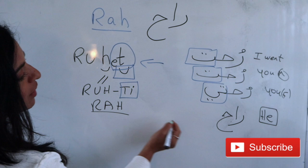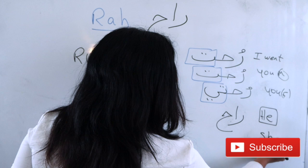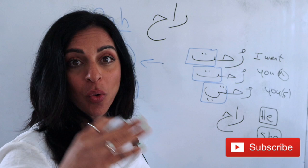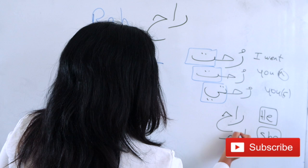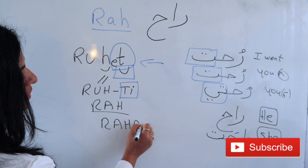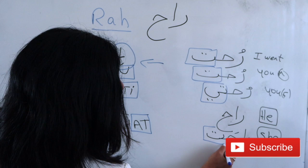With 'she,' it's exactly the infinitive, but adding 'at' at the ending. So raah becomes rahat. Rahat. This 'at' is the rule we add — not only to verbs. She went: hiya rahat.